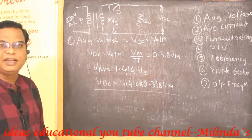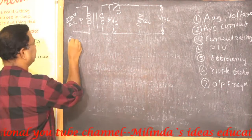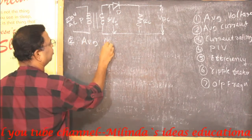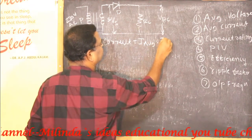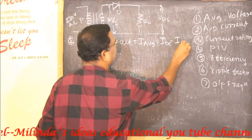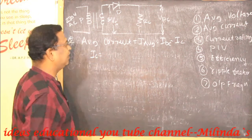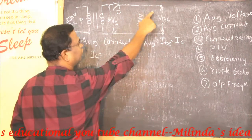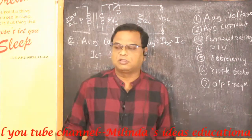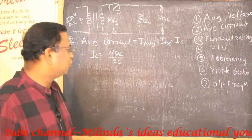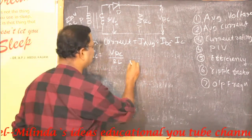That is the first parameter — average voltage. Now we move to the second parameter, which is average current, also written as I average, I DC, or I L (load current). The load current is the current flowing through the load resistor of that rectifier. I L is given by Vdc divided by RL, using Ohm's law.